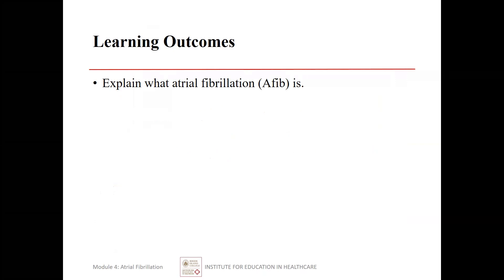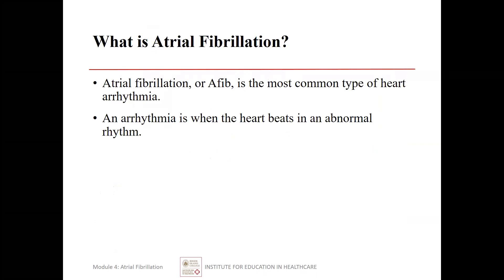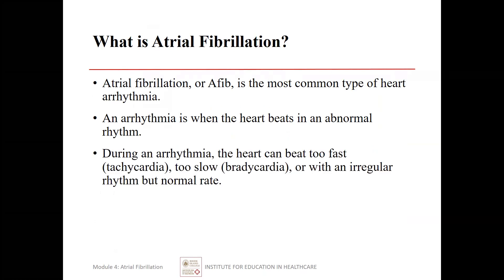Atrial fibrillation is also called AFib. It is the most common type of heart arrhythmia. An arrhythmia is when the heart beats in an abnormal rhythm — the heart can be too fast (tachycardia), too slow (bradycardia), or with an irregular rhythm but a normal rate.